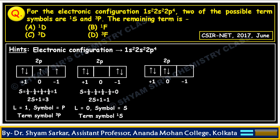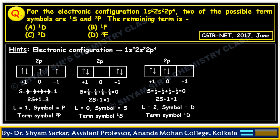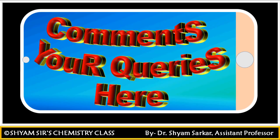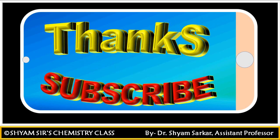For another possible electronic arrangement, S = +½ − ½ + ½ − ½ = 0, so spin multiplicity 2S+1 = 1. Here the L value becomes 2, and L = 2 means the symbol is D. So the term symbol is 1D. Matching with the four options given, option A is the correct answer: 1D. If you have any query regarding term symbol calculation, put it in the comment box and I'll make short videos to answer. Thank you, and please subscribe for more updates.